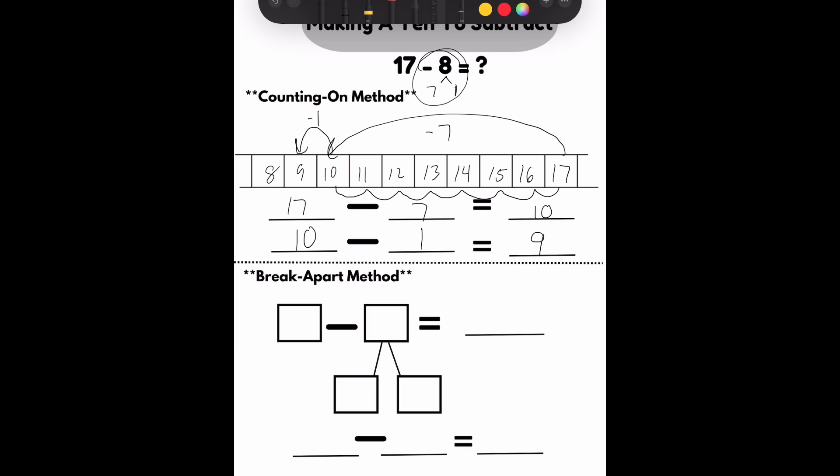Final strategy, the break apart method. I just have to write the same exact equation on top. I don't know my answer yet, so I'm going to leave that blank. I'm going to focus on this side over here. And, I need to ask myself, 17 minus what equals 10? In this case, it's 7. 17 minus 7. And, I know that makes 10.